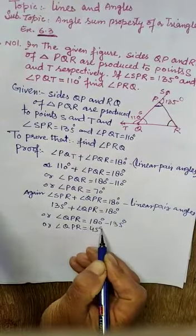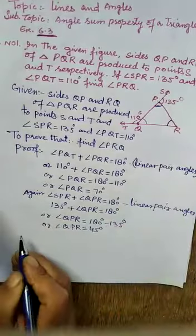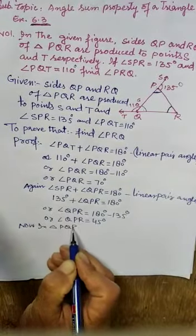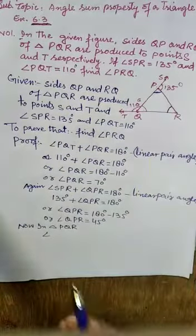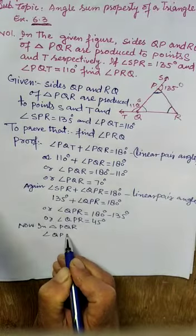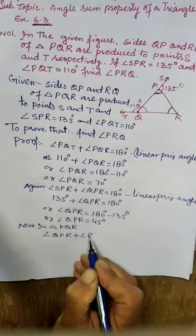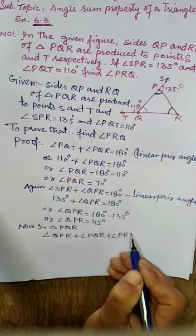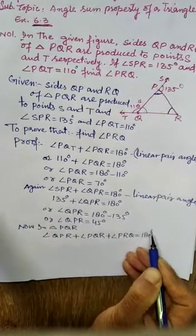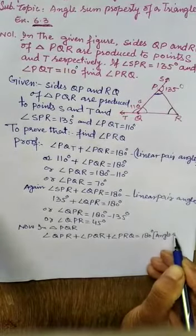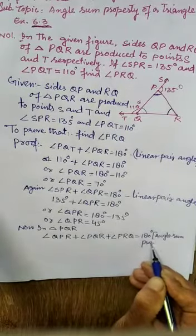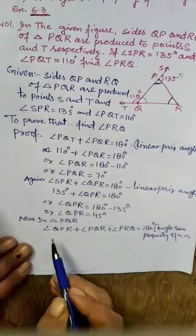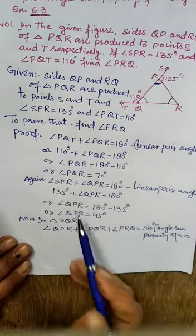Now in triangle PQR, we use the angle sum property of a triangle. Angle QPR plus angle PQR plus angle PRQ equals 180 degrees. This is the angle sum property of a triangle.